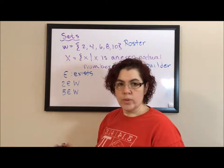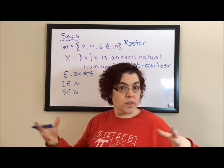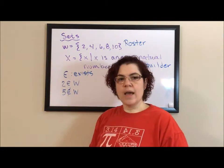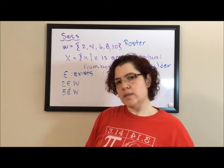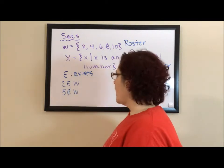But that's not true. So when it's not true, just like the don't smoke signs or the other don't signs you see, we just put a slash through the E. And now instead of saying 5 exists in W, we say 5 does not exist in W.